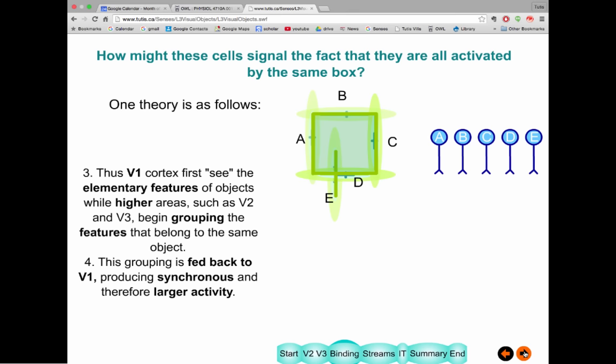So the synchrony happens in the higher order areas as they gradually assemble the object, but then fed back to these lower areas. When we record from cells in V1, when not a single object appears but many features, if there's asynchrony, but when the single object appears, they start firing together.